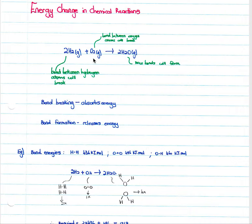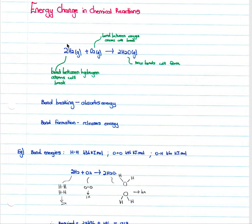If we look at 2H₂(g) + O₂(g) → 2H₂O(g), the bond between hydrogen atoms will break in our H₂ molecules, and the bond between oxygen atoms will break in our O₂ molecules. New bonds will then form between H atoms and O atoms to form H₂O gas.